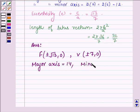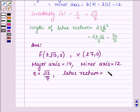The length of the minor axis is 12, the eccentricity e is √13/7, and the length of the latus rectum is 72/7.